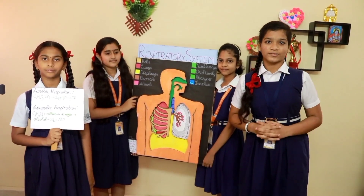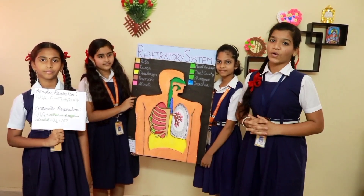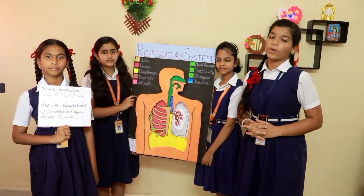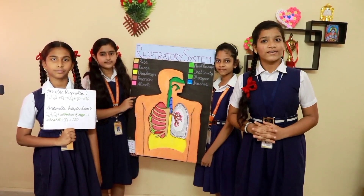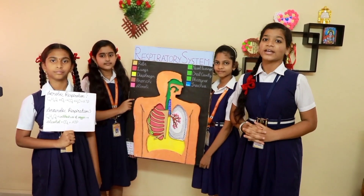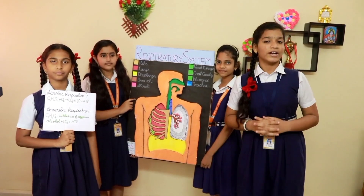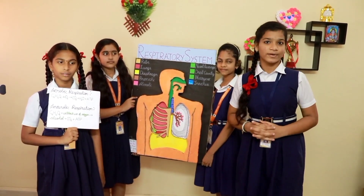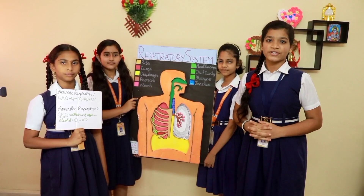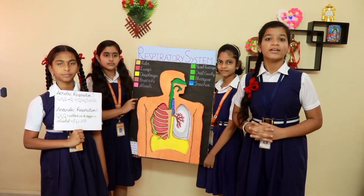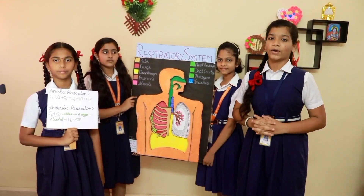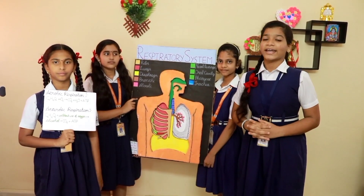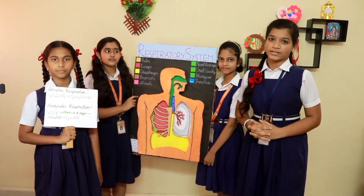Now let's look into respiration. The process by which the oxidation of food takes place to produce energy in the form of ATP, which is adenosine triphosphate, is called respiration. There are two types of respiration: aerobic respiration and anaerobic respiration. Aerobic respiration is the respiration in which the breakdown of food takes place in the presence of oxygen. It takes place in the mitochondria.